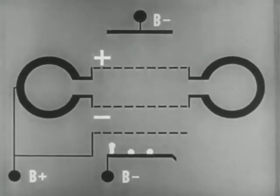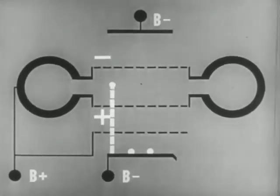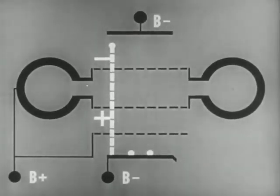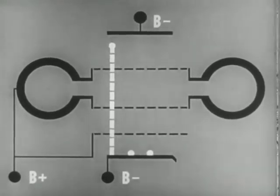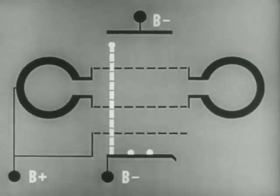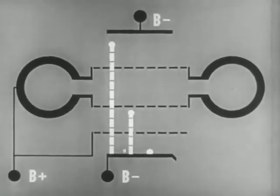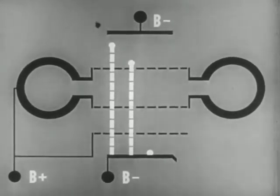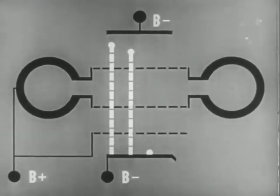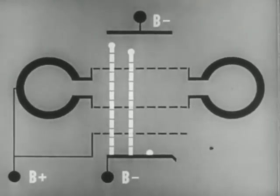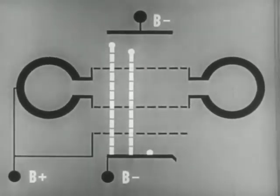Now let's take three electrons as they leave the cathode at slight intervals and see how the bunching effect is produced. The first electron leaves the cathode and reaches the buncher grids at a time when the bunching voltage is maximum accelerating. It is speeded up so that it goes almost to the repeller before being turned back. The second electron, leaving the cathode an instant later, reaches the buncher grids when the bunching voltage is zero. Its velocity is unchanged, so it is stopped before approaching so close to the repeller.